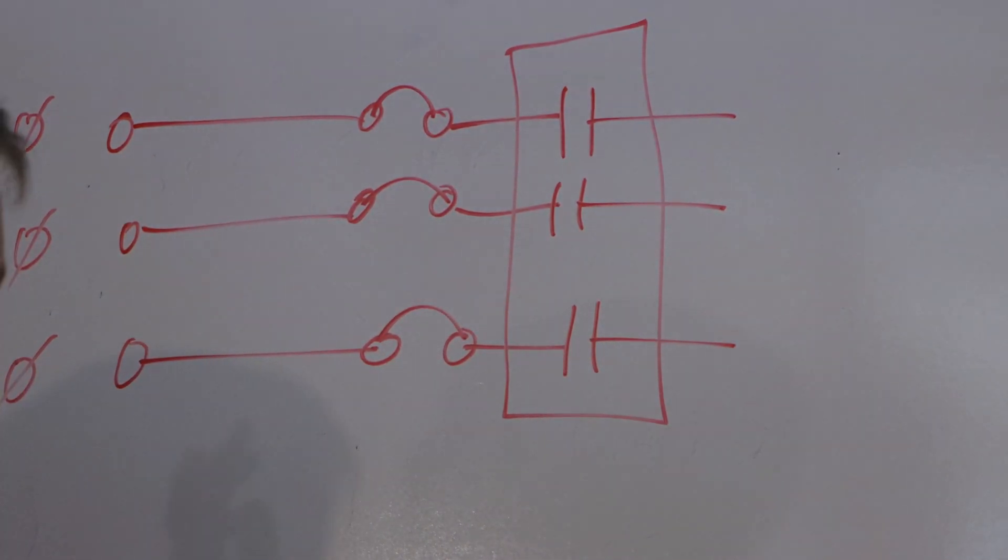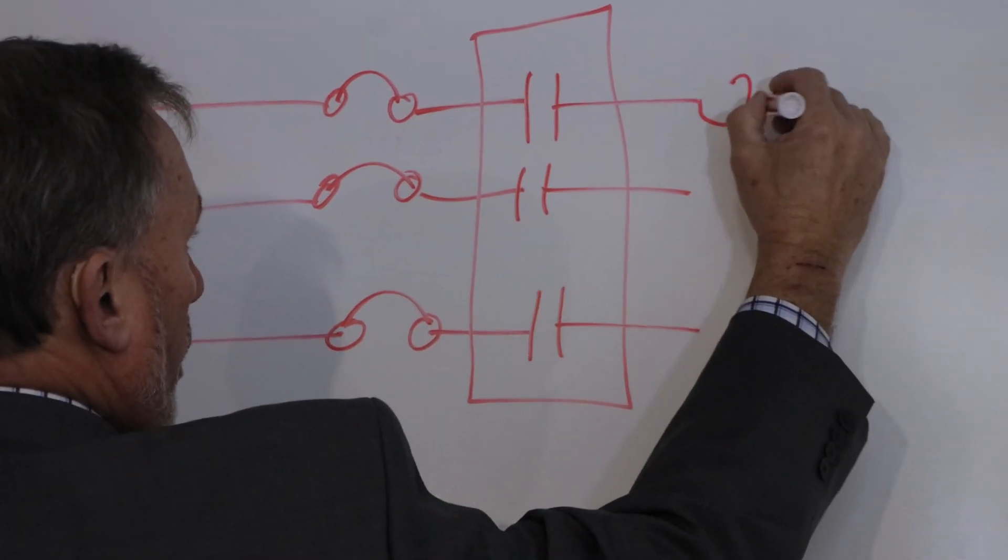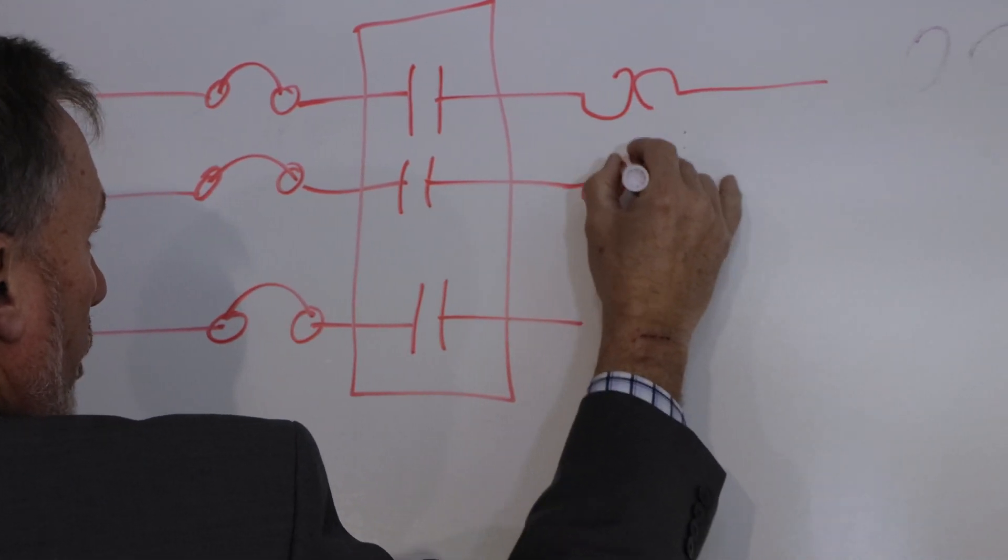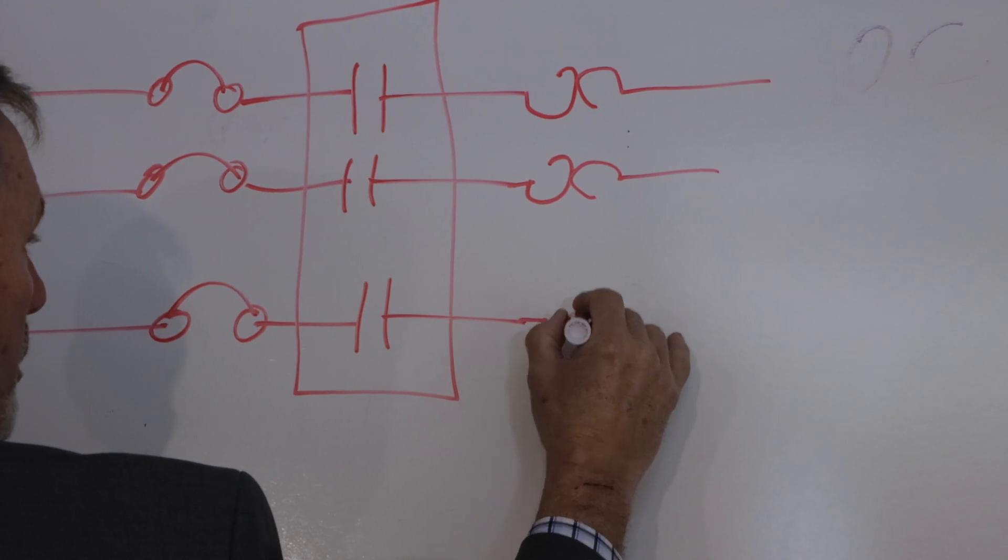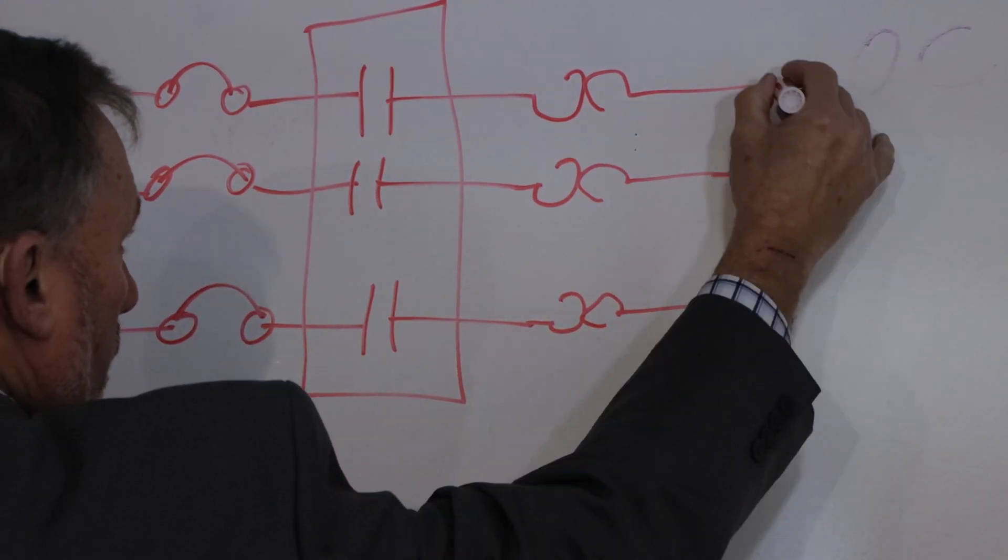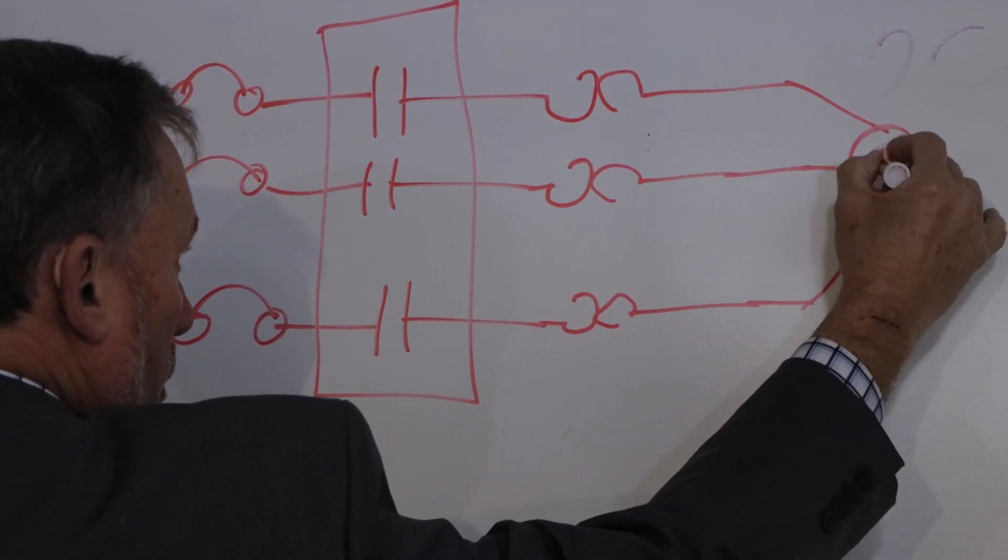they transfer the power out of the contactor to what we call heaters or overloads. This is a bad drawing, but the best you're going to get from this artist. These are representative of heating elements for overload protection. And then from there, basically, we take the power to the motor, and we're done.